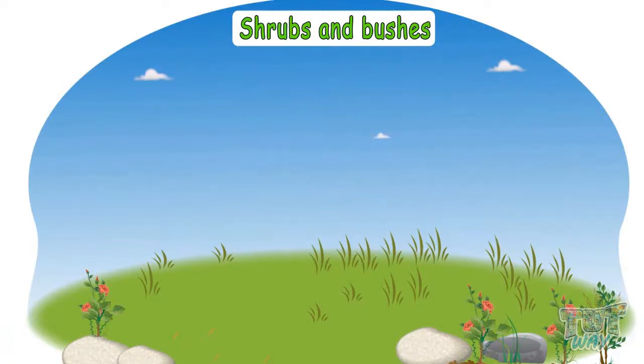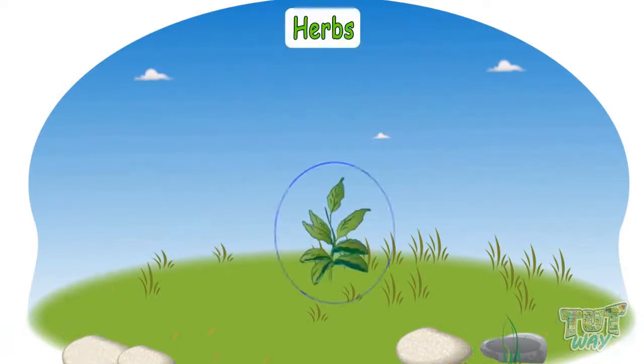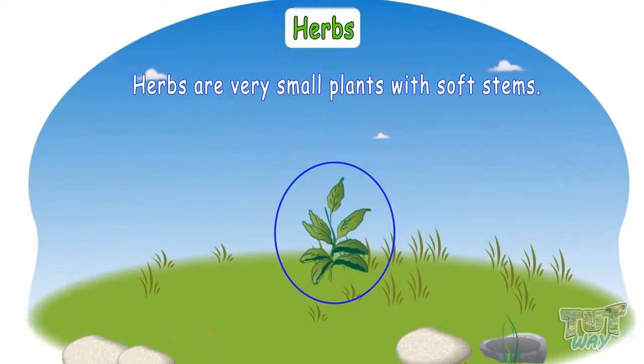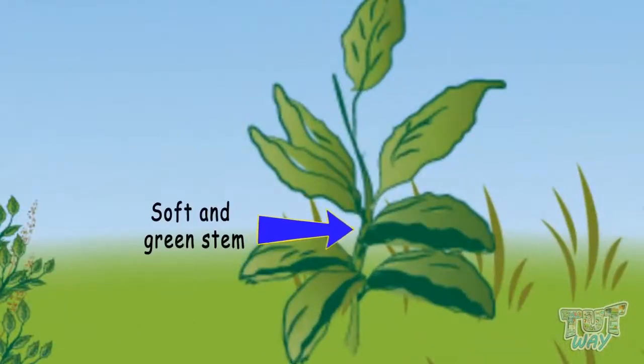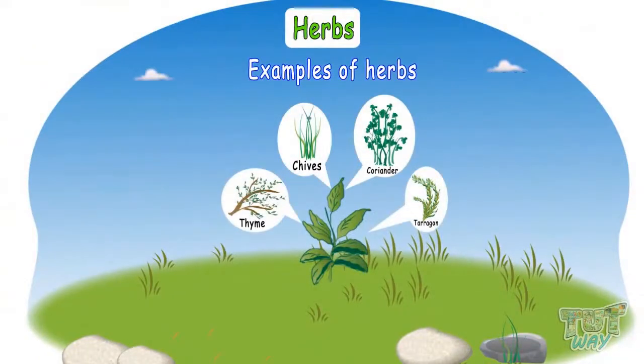Now see what are herbs. Herbs are very small plants with soft stems. Their stems are not hard and mostly are green in color. Let's see some herbs. These are some examples of herbs. Their stems are weak and green and also very soft.